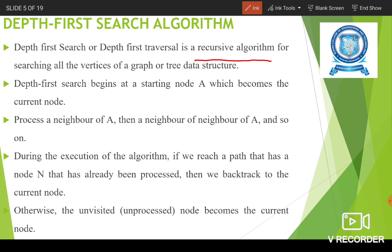How does this algorithm work? It begins with the starting node A, and A becomes the current node. Then you process the neighbors of A, then the neighbor of the neighbor of A, and so on. For each node we search its neighbors in depth-wise — that's why it's called depth first search. During execution, if a node is already processed, no need to revisit it; just backtrack to the current node. If the node is not processed, make that node the current node.